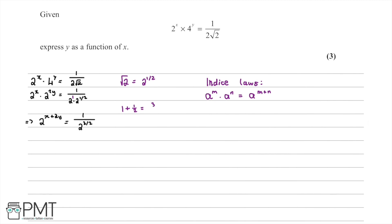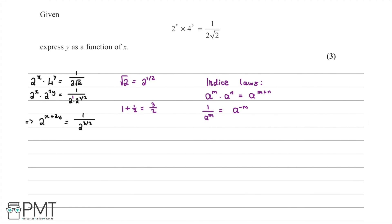We also have the index law that 1 over a to the power of m is equal to a to the power of negative m. We can apply this second index law to get rid of the denominator. Our left hand side stays the same — 2 to the power of x plus 2y — and this is going to be equal to 2 to the power of negative 3 over 2.